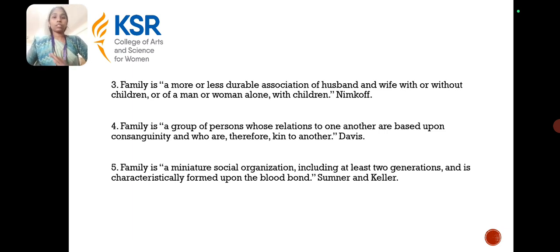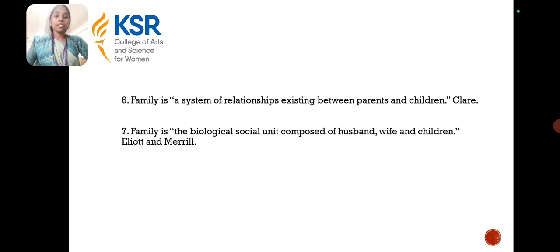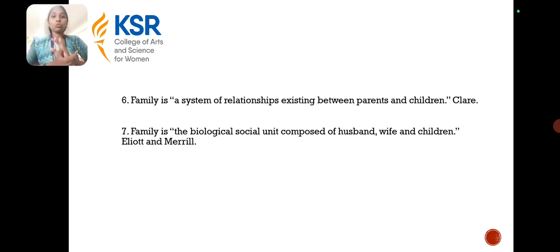More or less all the definitions give the same meaning, with slight changes in the sentences and words alone. The next definition: family is a relationship, a system of relationship existing between the parents and the children — given by Clare. And the biological social unit composed of the husband, wife and children — this definition for family was given by Elliot and Merrill.